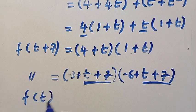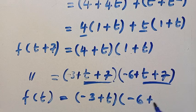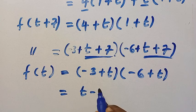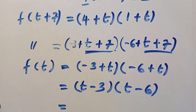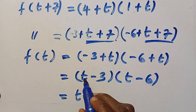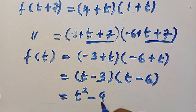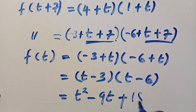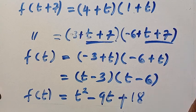Therefore, we have f of t which equals t minus 3 times t minus 6. By expanding this, we have t multiplied by t, that is t squared, minus 6t and minus 3t, which gives us minus 9t, then plus 18. And this is the value of f of t. This is the first method and how simple it is.